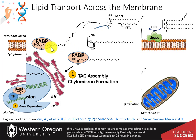Once inside the enterocyte and bound with the FABPs, free fatty acids and monoacylglycerides have three major fates. First, they can be reassembled into triacylglycerides, and cholesterol is also converted to cholesterol esters. This occurs within the endoplasmic reticulum (ER). Inside the ER, the reassembled lipids are packaged in a particle structure called a chylomicron that consists of a single phospholipid layer with cholesterol and apolipoproteins. Chylomicrons are then released into the lymphatic system, travel to the bloodstream, and deliver triacylglycerides and cholesterol to downstream targets such as skeletal muscle and adipose tissue.